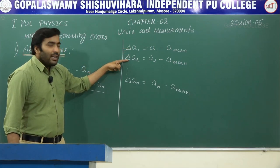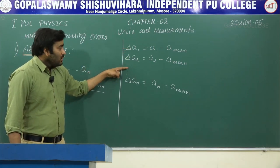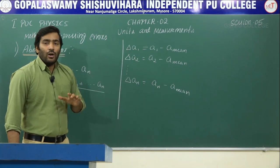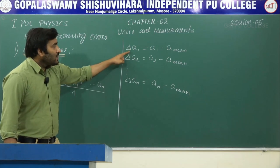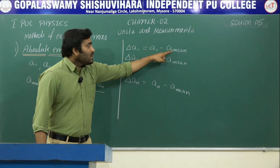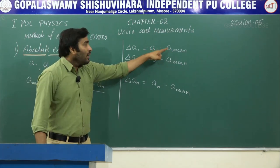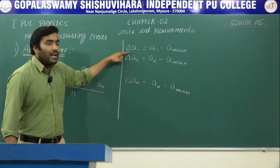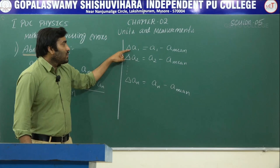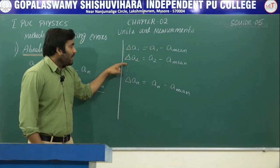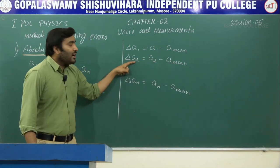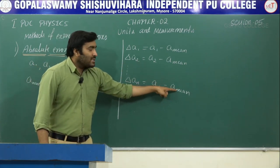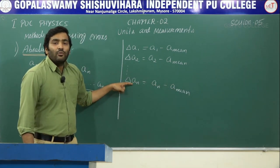Delta A1, delta A2, delta A3, up to delta An — these values are called absolute errors. The difference between the measured value and the true value is called the absolute error. You must also add one more thing: you should take the magnitude here — mod of delta A1, and similarly for all others. Even if this difference becomes negative, you should take it as positive. So absolute error is always positive; it cannot be negative.